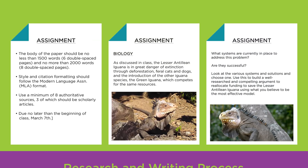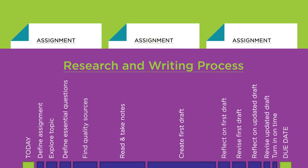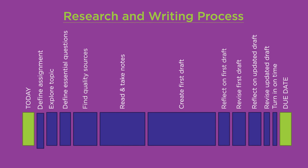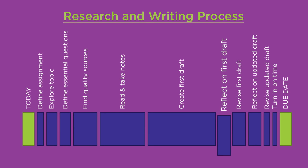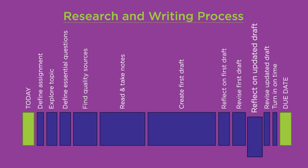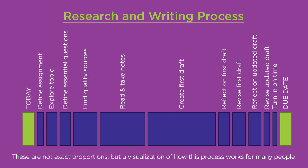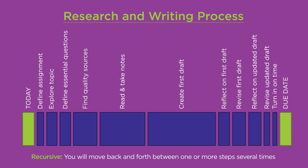Let's take a look at the major parts of the research and writing process. Each blue block represents a chunk of that process — the larger the chunk, the more time it will usually take. These are not exact proportions, but a visualization of how this process works for many people. Some parts of this process are recursive, meaning you'll move back and forth between one or more steps several times.